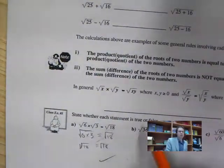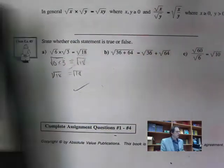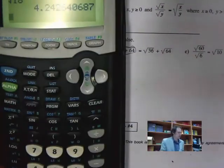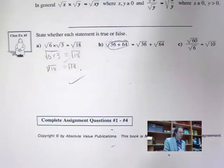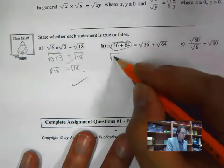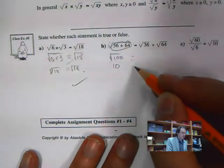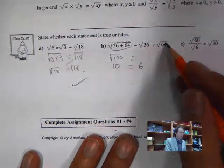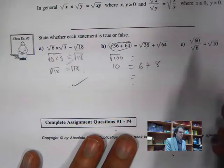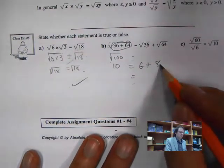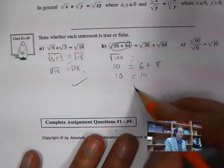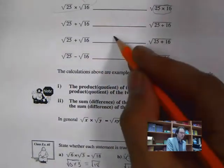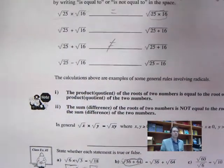The next one starts with addition. We add inside first: 36 plus 64 is 100, so the square root of 100 equals 10. But if we try the other side: square root of 36 is 6, square root of 64 is 8, and 6 plus 8 is 14. Does 14 equal 10? No — so that's not true. You cannot split a radical over addition.